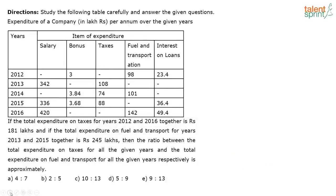The next question is on missing data interpretation. This DI is actually a very easy one in the sense there is no much logic required — you just have to do some additions, multiplications, and divisions. The key here is the calculations, as there are a lot of calculations involved. Option C is the correct answer — that is 10 is to 13.